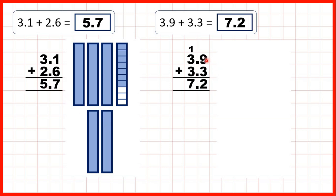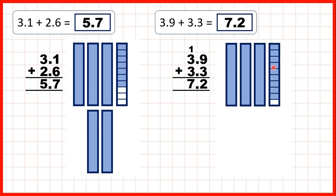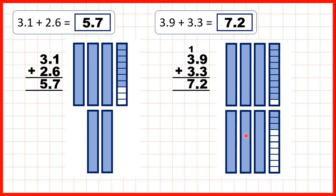Then we had 3.9, so that's 3 wholes and 9 tenths, and we were adding 3.3, so that's 3 wholes and 3 tenths. We started by putting our tenths together to make 12 tenths, but 12 tenths is the same as 1 whole and 2 tenths. That's why we carried the 1 whole over to the ones column and left the 2 in our tenths answer line. Then 1 plus 3 plus 3 is 7, and you can see that we have 7 wholes altogether.